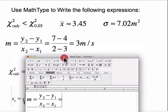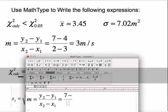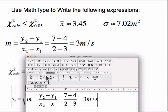And then press equals. And then I'm going to do another fraction. 7 minus 4 out of 2 minus 3 equals 3 meters per second. So I'll just type in all those things on the keyboard.